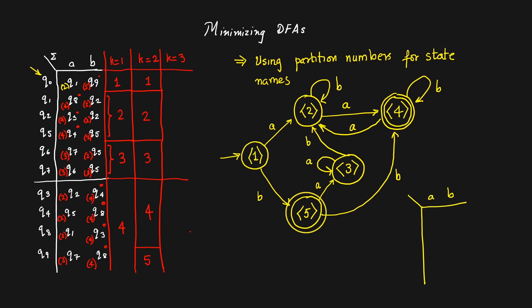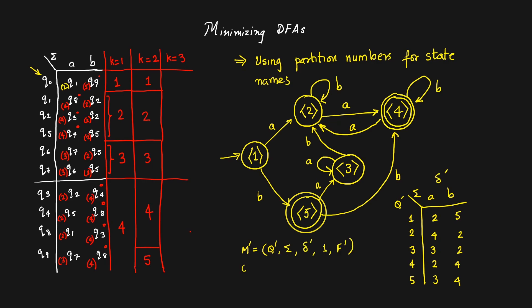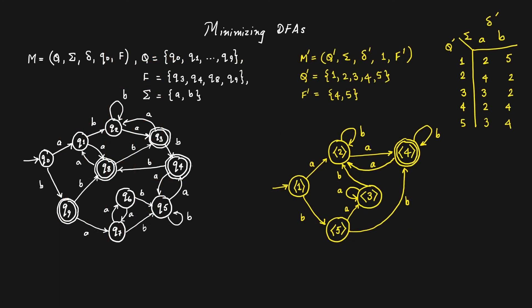In the minimized automaton, partitions 4 and 5 are the final states. We draw the new transition function table with 1, 2, 3, 4, and 5 as the states. We define this DFA as M' containing the state set Q', the same alphabet sigma, the transition function delta' given in the table, with initial state 1 and final state set F' containing 4 and 5.